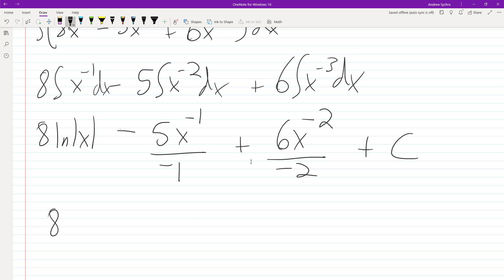When we simplify this, we get 8 times natural log of x, minus, or plus 5, and you know what, we'll use positive exponents again. So 5 over x, minus 3x squared, but using positive exponents, plus C.